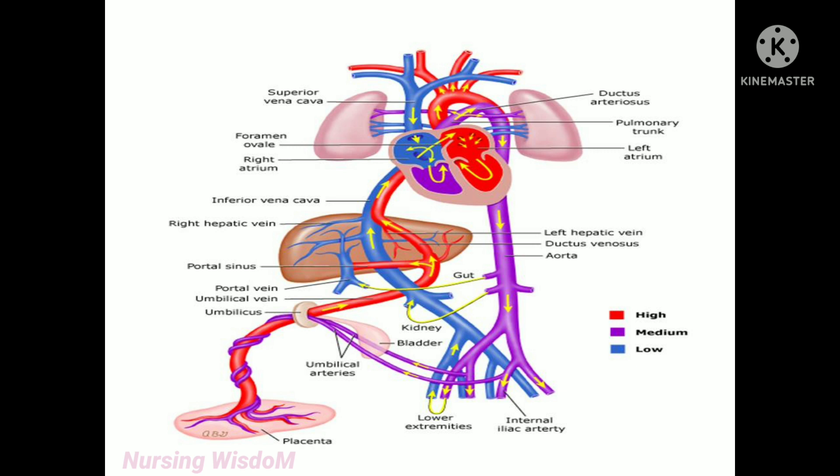Now the placenta is not supplying oxygenated blood. So the blood coming from the right ventricle through the pulmonary artery will go to the lungs and get oxygenated, because now the baby is breathing. From the lungs, the blood will come through the pulmonary vein to the left atrium, from the left atrium to the left ventricle, and from the left ventricle during ventricular systole it will go to the aorta.